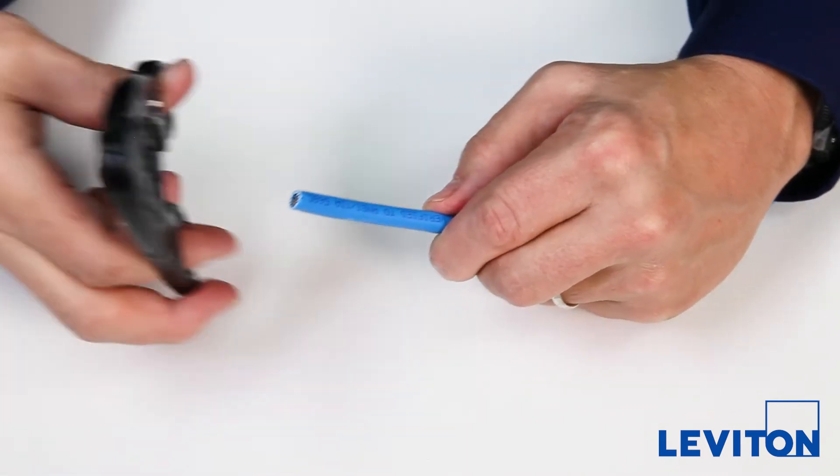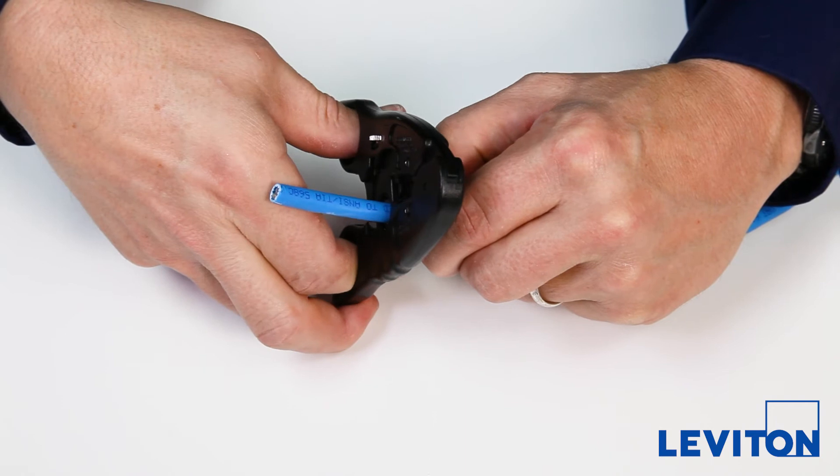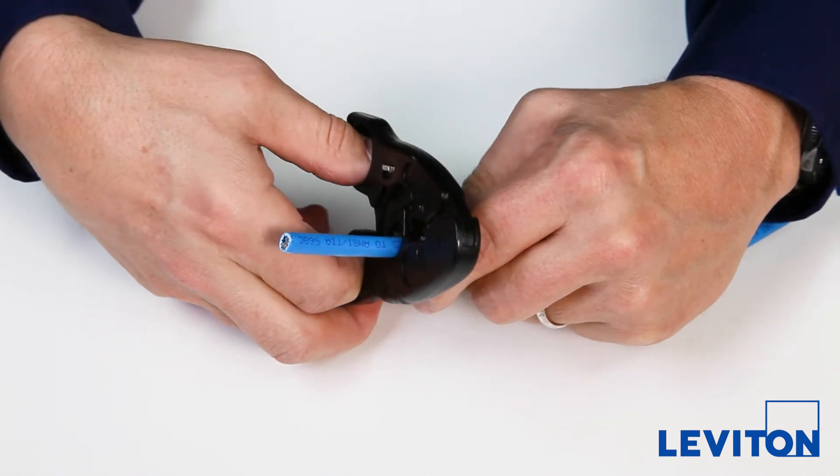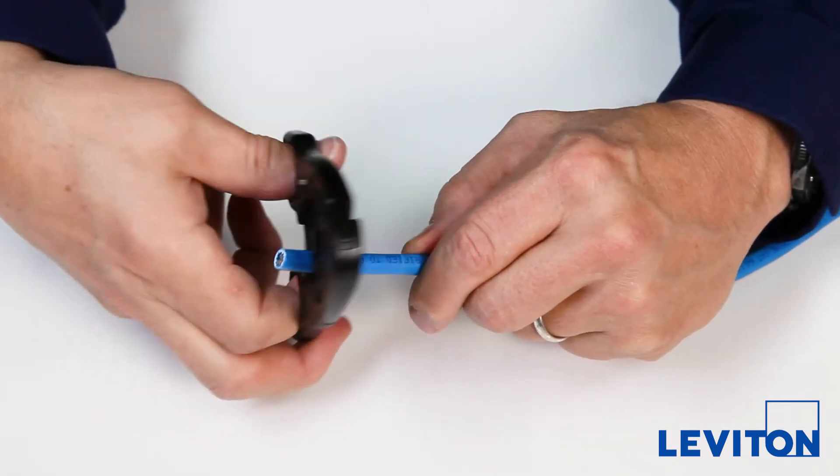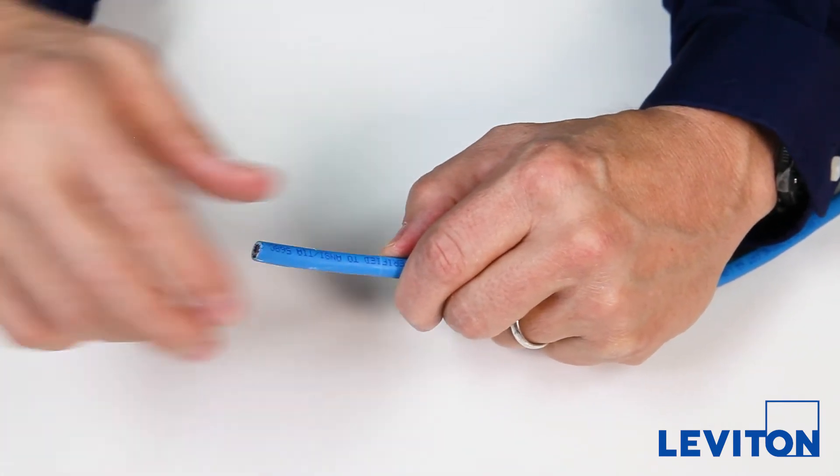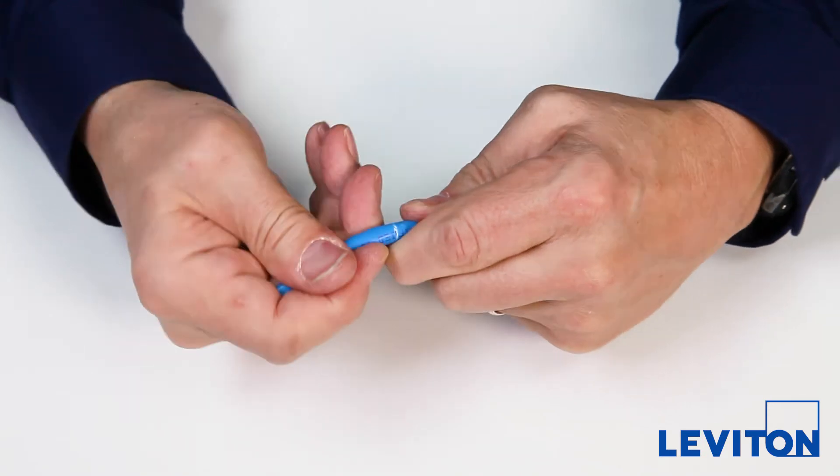To strip the cable, position the data cable strip tool about 2 inches from the end of the cable and make a cut using a single circular motion. Be careful not to nick the conductors. Break the cable jacket and slide it off.